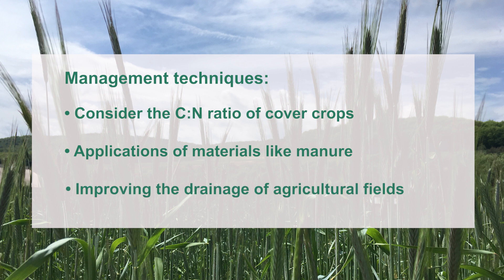Additionally, improving the drainage of agricultural fields can help to increase the amount of nitrogen that is made available to growing plants by helping the soil to remain at the optimal moisture level for microbial activity. It also reduces the risk of nitrogen loss to denitrification, a microbial process that occurs in oxygen-depleted soils.